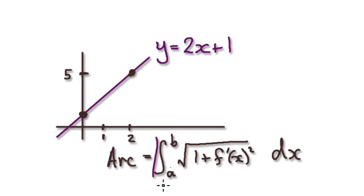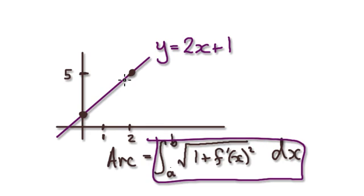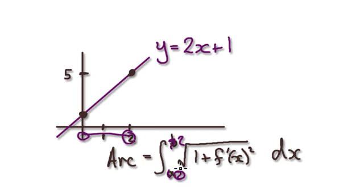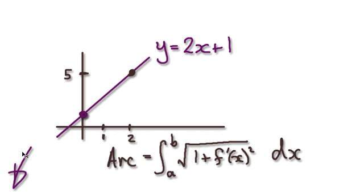Now use the arc length formula to make sure it's consistent with Pythagoras. Work out the arc length, even though it's a straight line — work out the arc length from 0 to 2. Let's pause and have a go.